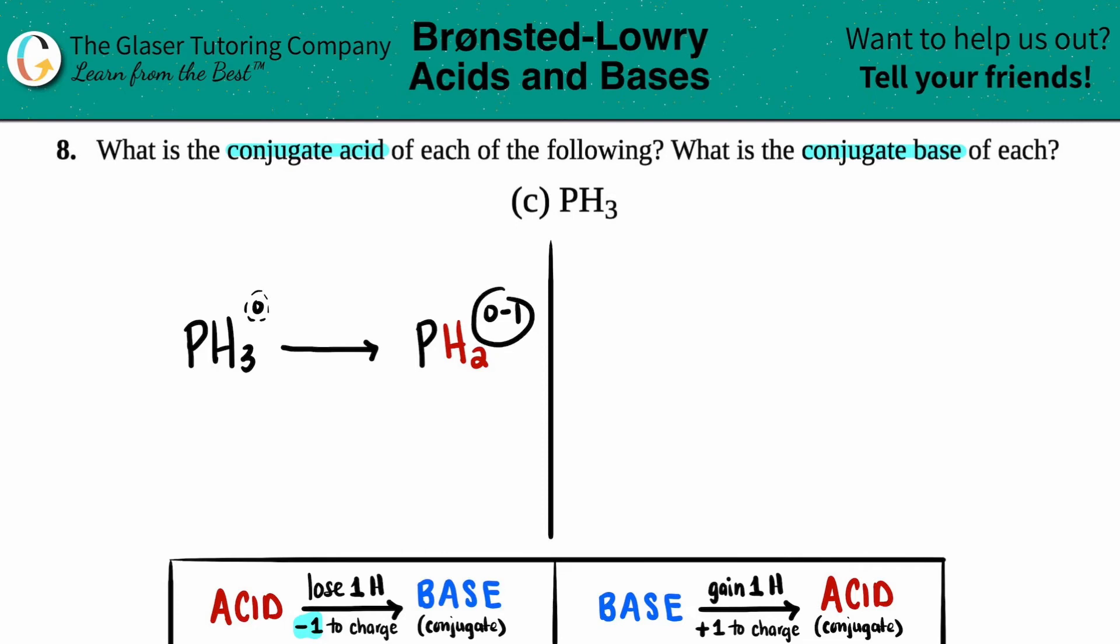Zero minus one, that's a negative one. Or you could just put a negative charge. And that would be your conjugate base. I'm just going to put con base for short.